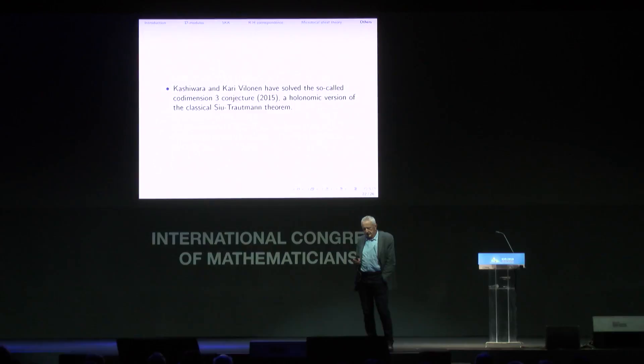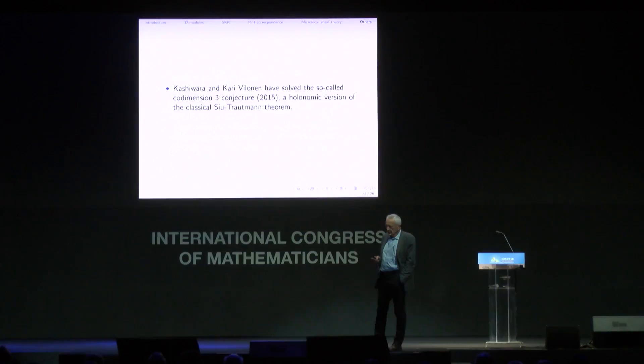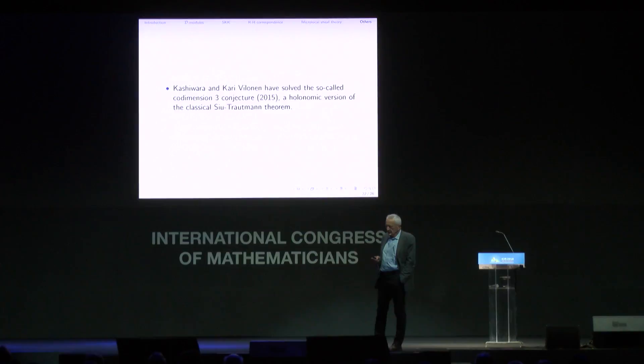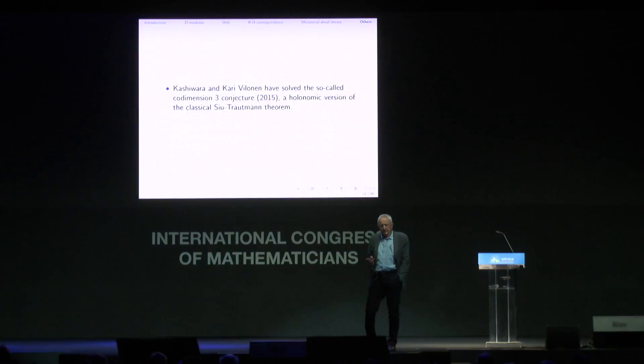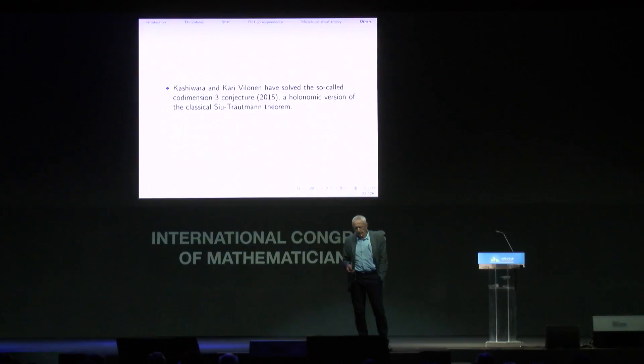Another subject: Kashiwara with Vilonen solved the so-called codimension-three conjecture. There is a classical theorem by Sue Trotman which says that under mild conditions, a holomorphic function defined outside a subvariety of codimension three can be extended through the subvariety. The analogous problem for holonomic modules — where the subvariety is a subvariety of a Lagrangian subvariety — is a very, very difficult theorem.